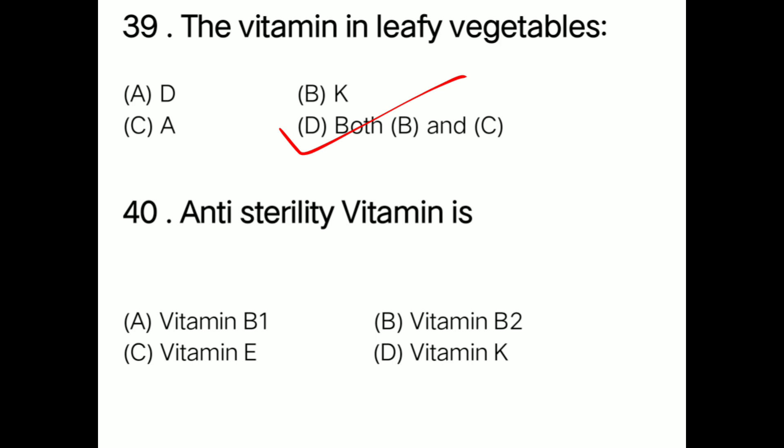Last question: The anti-sterility vitamin is option A vitamin B1, option B vitamin B2, option C vitamin E, option D vitamin K. Correct answer is option C: vitamin E is the anti-sterility vitamin.